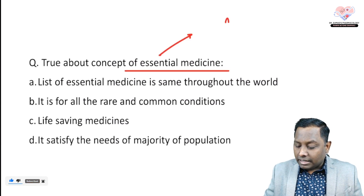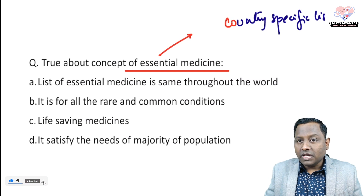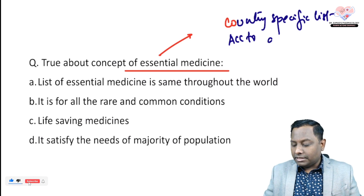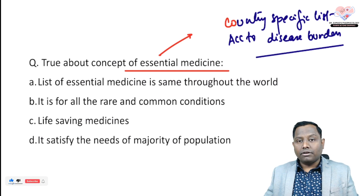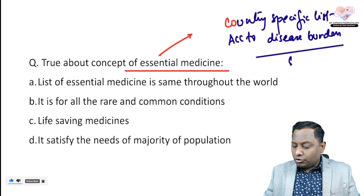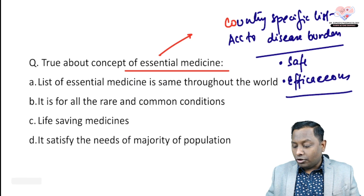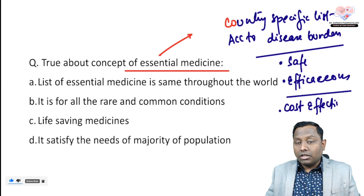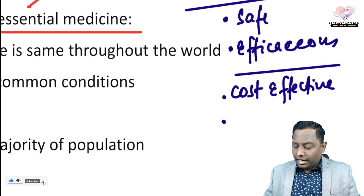The second question is about essential medicines. Essential medicine is a country-specific list of medicines given by every country according to the disease prevalence or disease burden of that nation. The drugs chosen for essential medicine should be safe, efficacious — which is the most important criterion — and cost-effective, where the cost of the entire therapy is considered, not the cost per tablet.